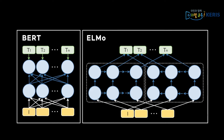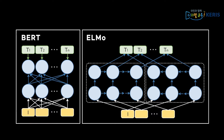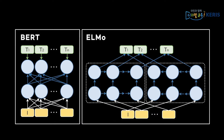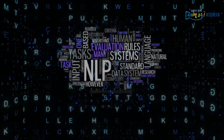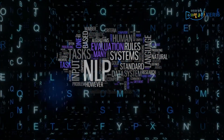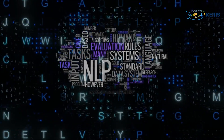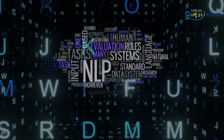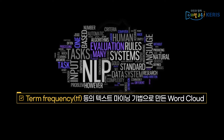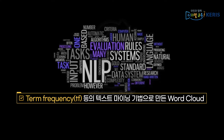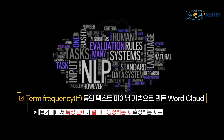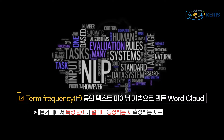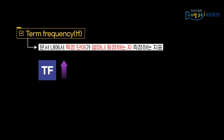최근에는 BERT나 ELMo와 같이 사전 훈련된 딥러닝 기반 언어 모델을 통해 다양한 자연어처리 문제를 해결하고 있습니다. 하지만 전통적으로 가장 흔히 사용되는 텍스트 마이닝 기법은 문서에 등장하는 단어의 빈도를 측정하는 것입니다. Term Frequency, 요약해서 TF라고 하는 용어 빈도는 문서 내에서 특정 단어가 얼마나 등장하는지를 측정하는 지표입니다.